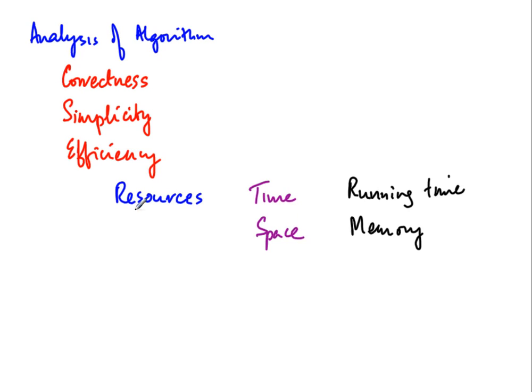It is important to understand how efficient an algorithm is because, when we look at algorithms across hardware improvements, the efficient algorithm will always beat an inefficient one no matter how much the hardware improves. You might argue that an inefficient algorithm today will run faster tomorrow, but so will an efficient one. As we shall see, there is an order of magnitude difference in the size of problems that efficient algorithms can handle compared to more inefficient ones.